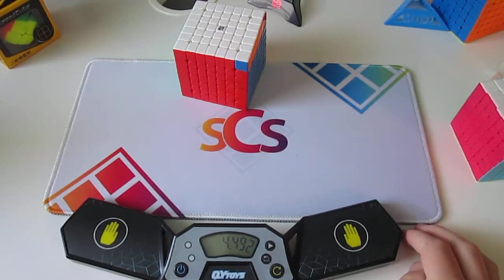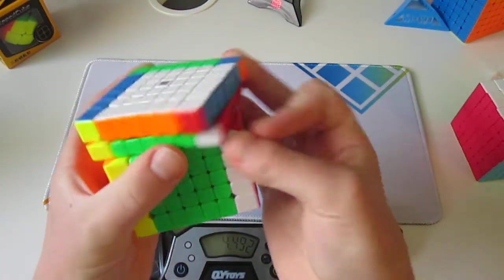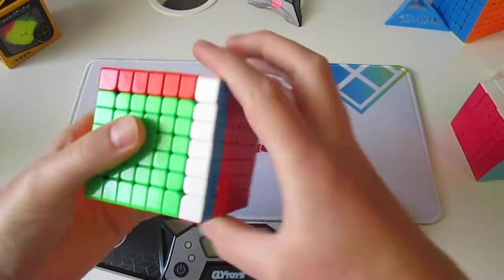4.492. I think it can get, like, 2-something on a 3x3. So, like, yeah, not bad for 7x7.